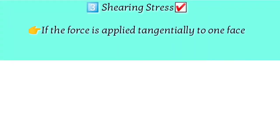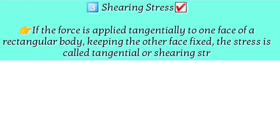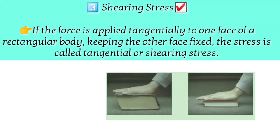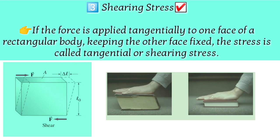The third type is shear stress. If a force is applied tangentially to one face of a rectangular body while the other face is fixed, the stress is called shear stress. When a force is applied parallel to the surface, the shape of the body changes. In shear stress, the force is parallel to the surface, unlike volumetric and longitudinal stress where the force is normal to the surface.